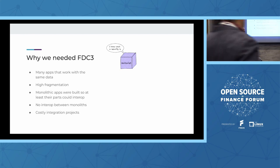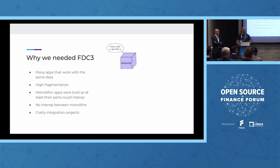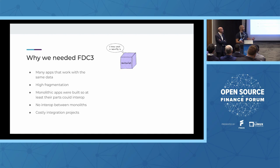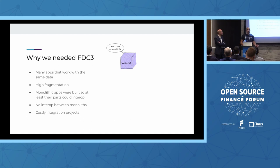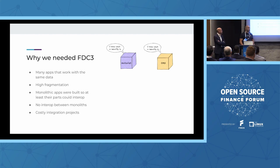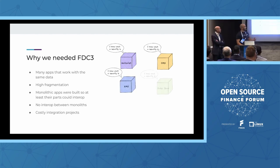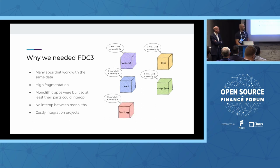Leslie already made a brief intro to FDC3, so I'm probably going to repeat some of the stuff he said. Back in the day, the financial services desktop had many apps — and they still have many apps — and these apps work pretty much with the same data. There used to be big monoliths, and the reason people would build these monoliths is because there was no interop. You could achieve some kind of interop between parts of the monolith, but there was no interop between the monoliths themselves.